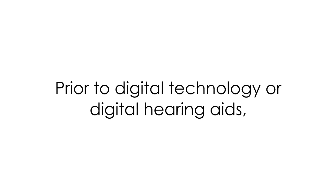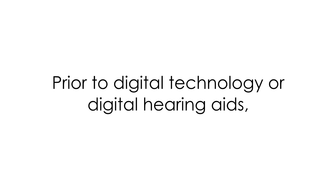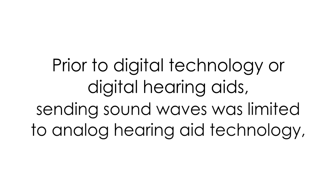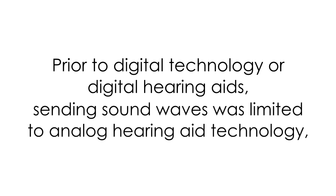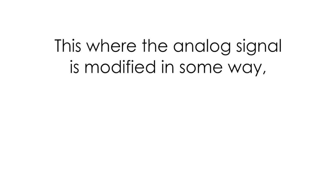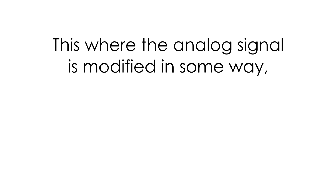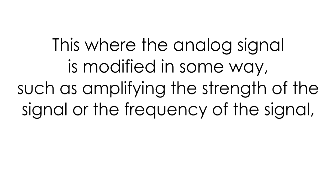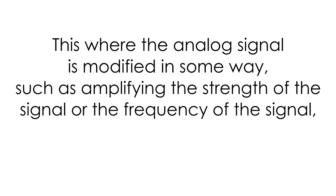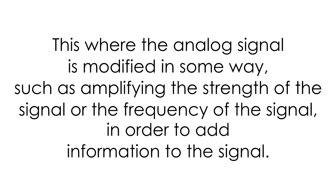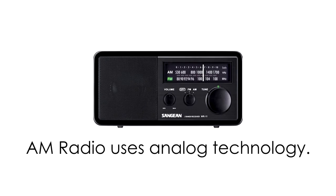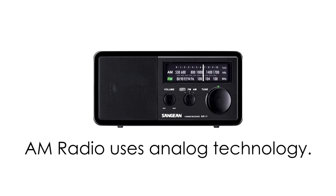Prior to digital technology or digital hearing aids, sending sound waves through a hearing aid was limited to analog hearing aid technology. This is where the analog signal is modified in some way, such as amplifying the strength of the signal or the frequency of the signal in order to add information to the signal. AM radio uses analog technology.